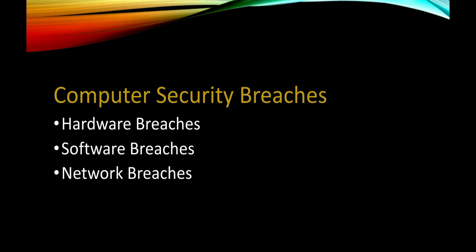Hardware breaches can be both accidental and intentional, and may include cable phone lines and modems. Software breaches include computer viruses and cracking of passwords. Network breaches occur because networks are used to transmit information, which can be intercepted by illegal people to access computer information. That is all about this chapter — thank you.